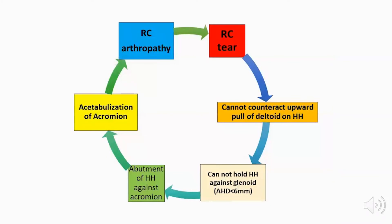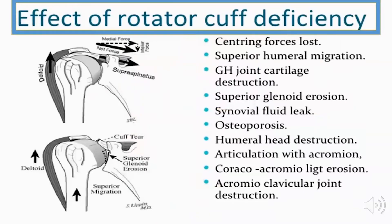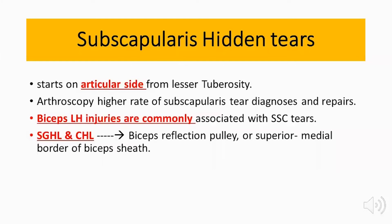The natural history of a rotator cuff tear begins when the rotator cuff can no longer counteract the upward pull of the deltoid on the humeral head, so the humeral head cannot be held against the glenoid, leading to diminution in the acromiohumeral distance. This causes abutment of the humeral head under the acromion, sclerosis of the acromion, and ultimately rotator cuff arthropathy. Effects of rotator cuff deficiency include loss of centering forces, superior humeral head migration, cartilage destruction, superior glenoid erosion, synovial fluid leakage, osteoporosis, humeral head destruction, acetabularization, coracoacromial ligament erosion, and acromioclavicular joint destruction. Subscapularis tears are hidden tears, usually starting on the articular side of the lesser tuberosity, diagnosed mainly by arthroscopy, and usually accompanied by long head biceps injuries.